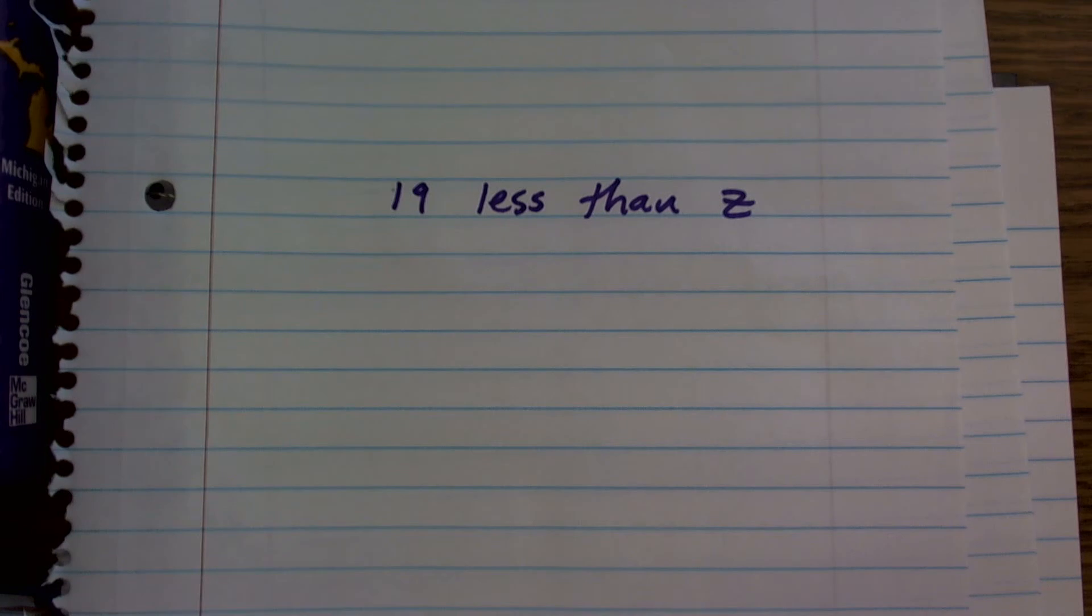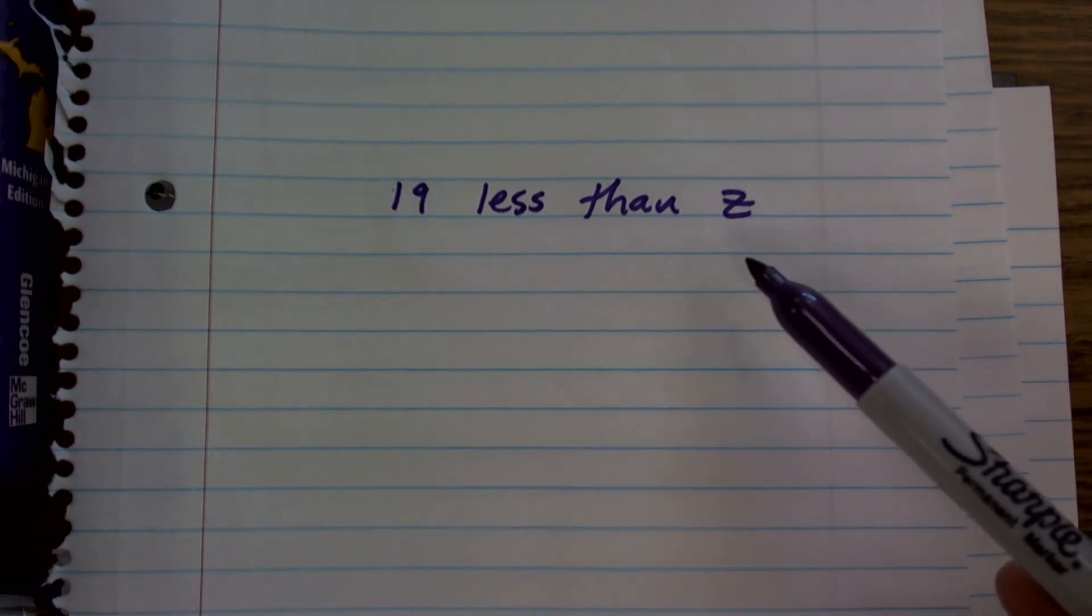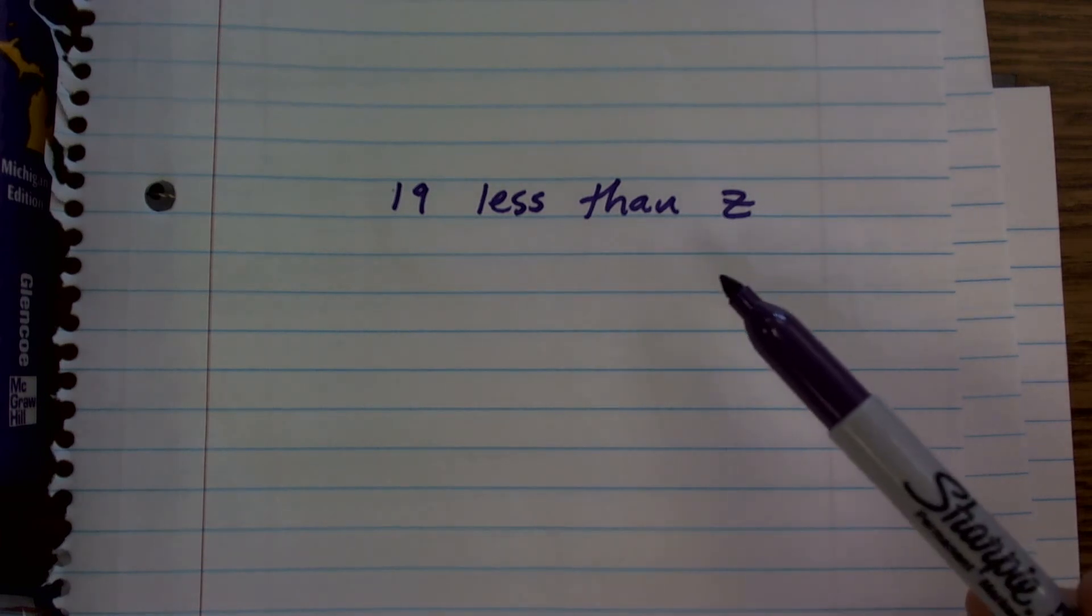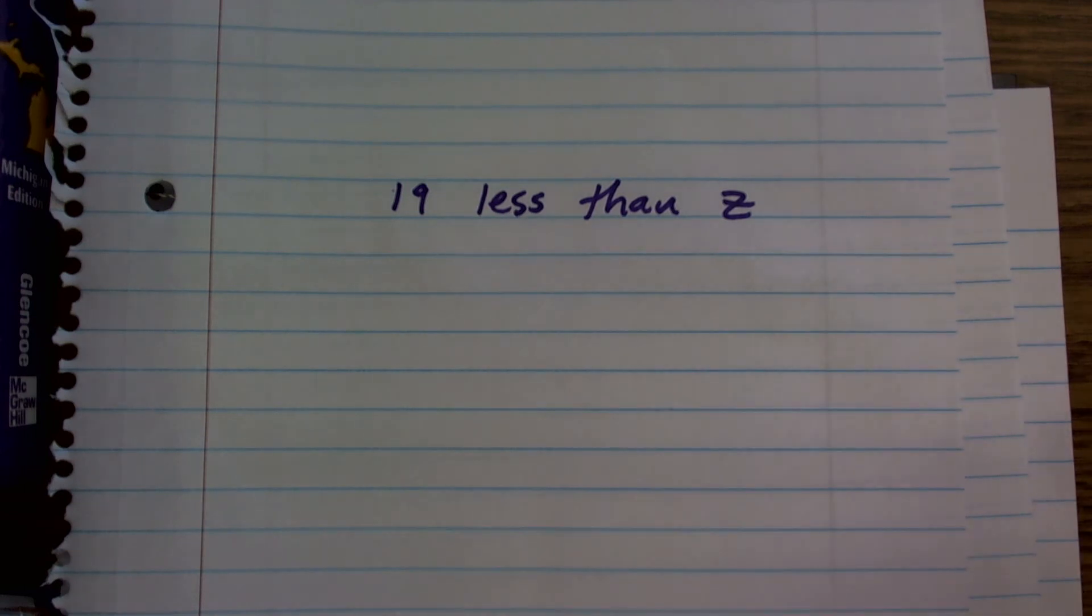Let's say Z is the amount of money that I have. And if you have $19 less than me, you're going to take my amount of money and subtract 19. So whenever we're using less than, remember that's going to tell us to use our subtraction sign.